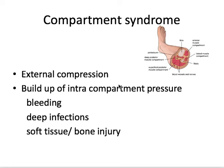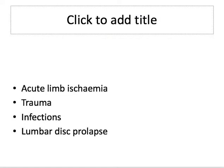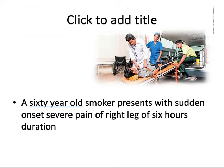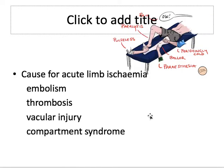Under vascular emergencies, we were discussing acute limb ischemia during our previous presentation. We took the presentation of a patient with acute onset severe leg pain, discussed the differential diagnosis including acute limb ischemia, how to differentiate it from other causes, and the causes including embolism and thrombosis.